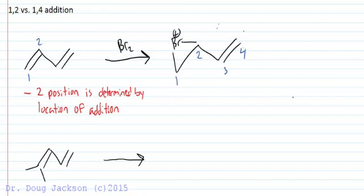We would start numbering on the side of the diene where the action is occurring. And if we had added the bromine to the other side, then we would have to number from the other direction.